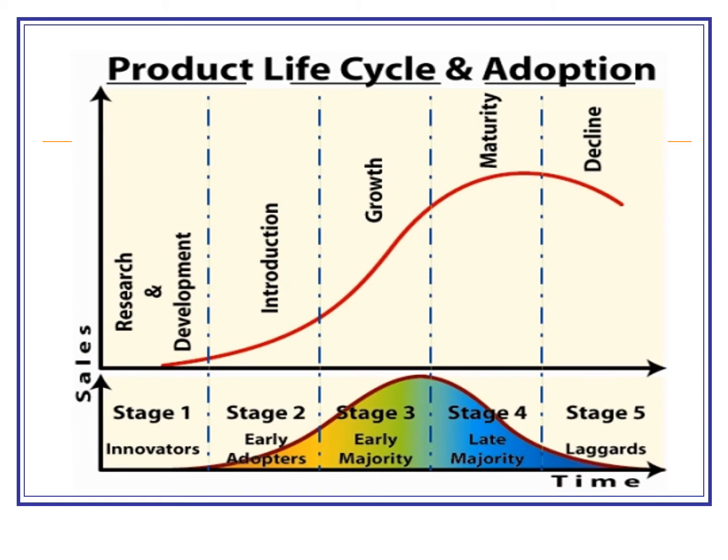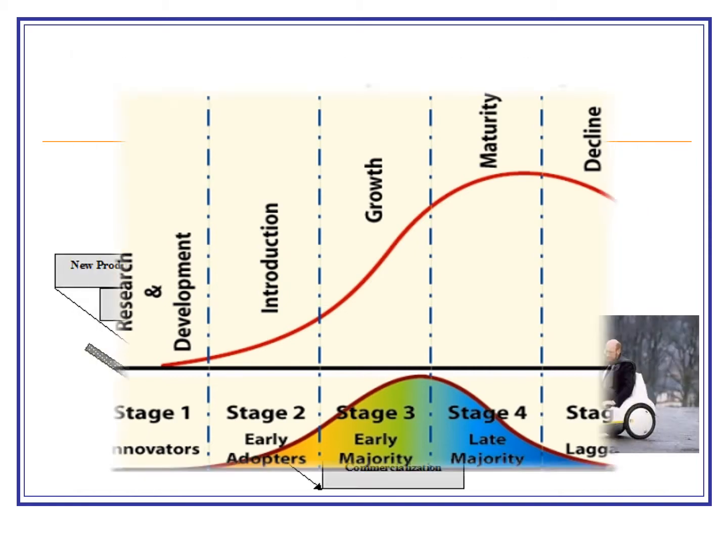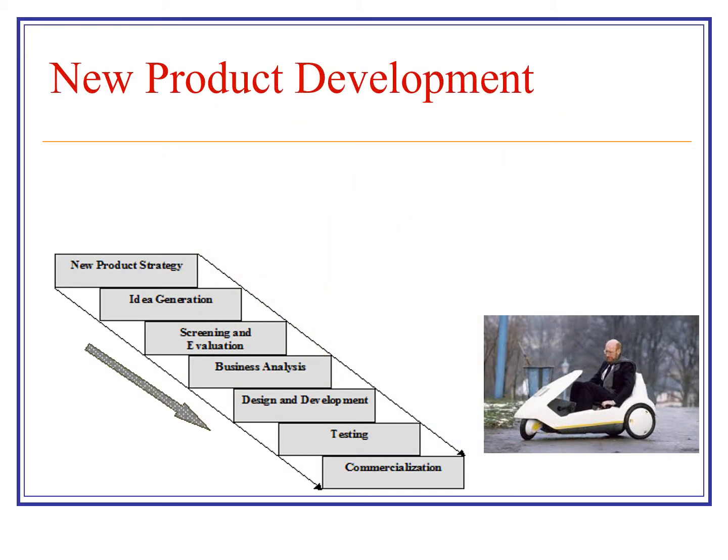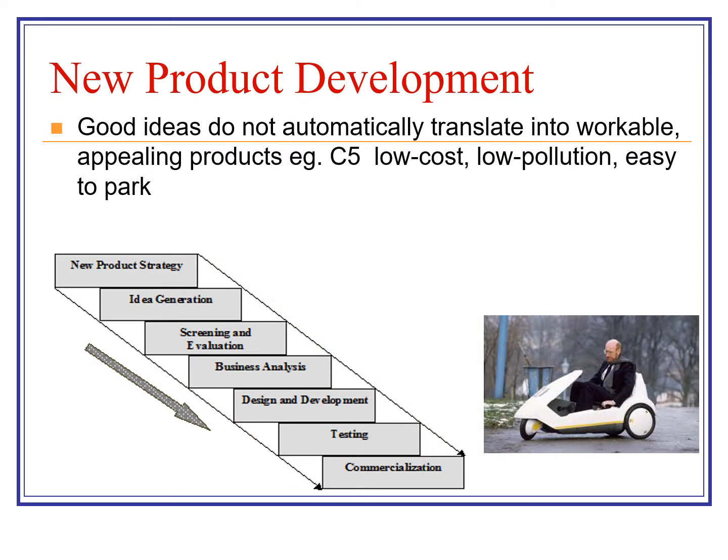This should look familiar — the product life cycle and the adoption curve. Just to remind you that at that early stage, stage one, the innovators: for new products, we're looking at this from a consumer point of view. You try to get the innovators to buy, then the early adopters, and it's getting out of that introduction phase that's the tricky point. We're going to look at firms and the stages they go through, and how it's not always successful.